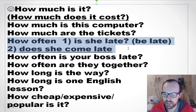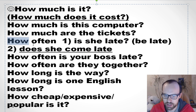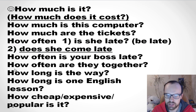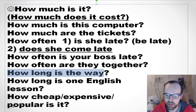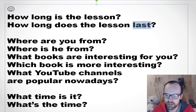Two more interesting examples: 'How often is she late?' There is the expression 'be late' — so you say 'is she late'. But if you have a verb, you need do or does in questions: 'How often does she come late?' 'How often is your boss late?' 'How often are they together?' 'How long is the way?' 'How long is one English lesson?' 'How cheap is it?' or 'How expensive is it?' 'How popular is it?' 'How long is the lesson?' — or 'How long does the lesson last?' — 'last' is the verb so you need do or does.